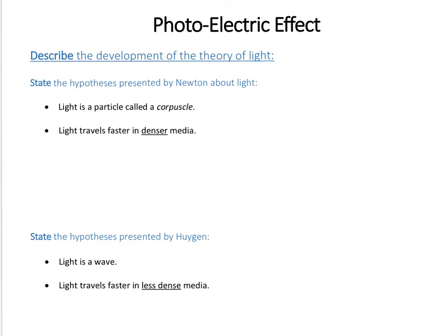There's been debate about light for a very long time because investigating it is very tricky. One of the first people to make a hypothesis about how things are working is, as often in physics, Isaac Newton. His hypothesis was that light was a particle, and he gave it a name - he called it a corpuscle. Essentially what he was saying is light's not like a continuous wave; it's just a series of particles.